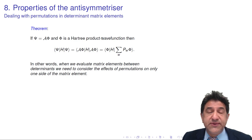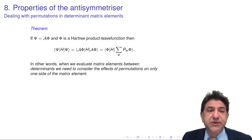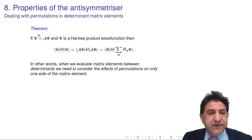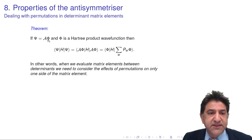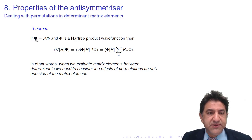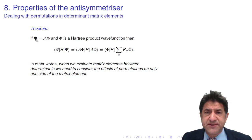Now we're going to use that result to start calculating matrix elements of a Hamiltonian. Let's look at this theorem. If we have a determinant wave function psi, which is an anti-symmetrizer acting on a product Hartree wave function phi — a product of individual orbitals which have been anti-symmetrized — so phi is a determinant wave function, a potential Hartree-Fock wave function. What are its matrix elements like?